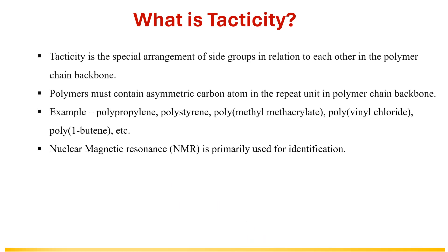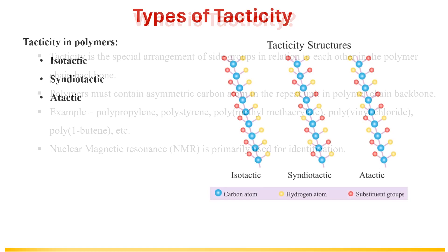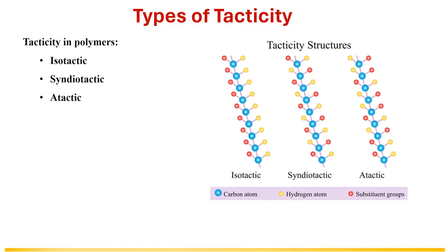Nuclear magnetic resonance (NMR) spectroscopy is primarily used to determine the tacticity in a polymer. Other than NMR, XRD is also used. There are mainly three types of tacticity found in polymers: isotactic, syndiotactic, and atactic.